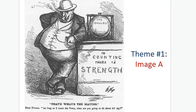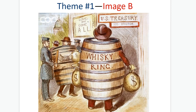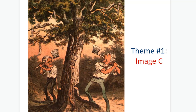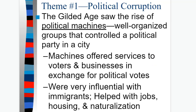Here's your first image for Theme 1, Image A. Theme 1, Image B. Theme 1, Image C. When we looked at this, Theme 1 is about political corruption.